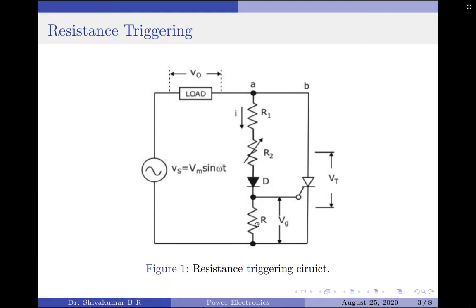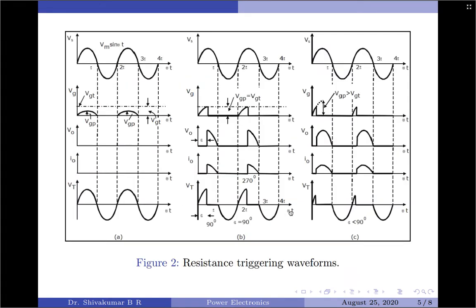When R2 becomes zero, the SCR will trigger at the smallest value of alpha possible. When R2 is set to an optimum value such that the gate peak voltage equals the gate triggering voltage, the SCR is triggered at alpha equals 90 degrees. This is because for R circuits, voltage and current are exactly in phase, and therefore the peak value of the gate voltage reaches the threshold value at alpha equals 90 degrees only. Looking at the waveforms, there are three different sets: the first is for when the gate peak voltage is less than the gate threshold voltage, the second is when the gate peak voltage equals the gate threshold voltage at alpha equals 90 degrees, and the third is when the gate peak voltage is greater than the gate threshold voltage.